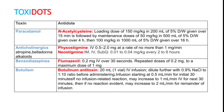Next is benzodiazepines — the antidote is flumazenil, 0.2 mg IV over 30 seconds. Repeated doses can be given up to a maximum of 1 mg. Next is botulism, a botulinum toxin — botulinum antitoxin can be given: 20 ml IV infusion diluted in normal saline at a 1:10 ratio, with infusion starting at 0.5 ml per minute for the initial 30 minutes.